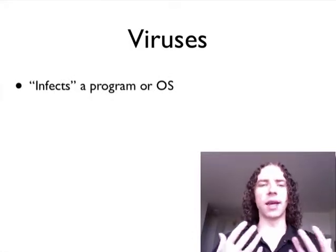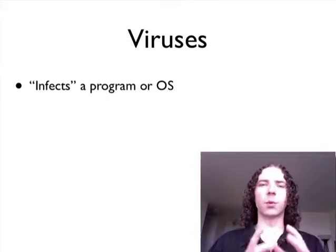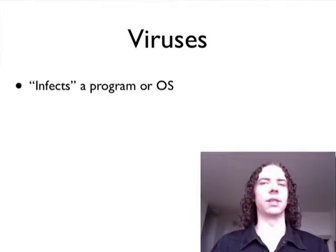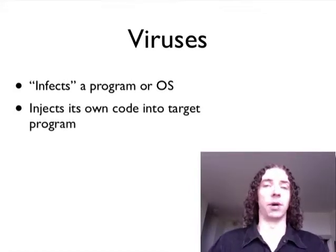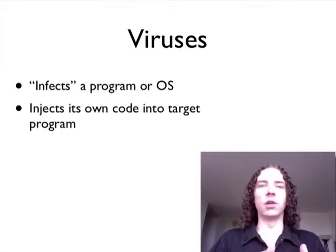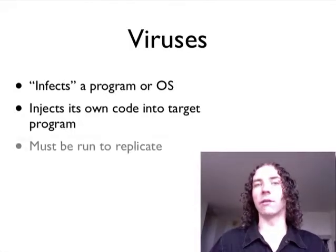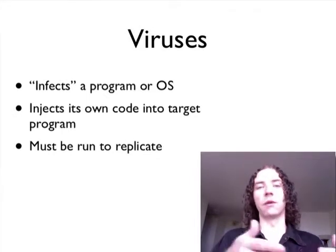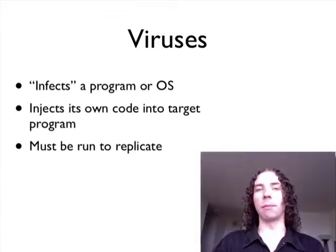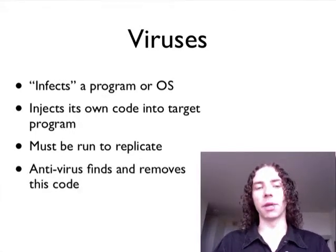A virus is kind of the thing everyone knows about — it's a well-understood concept within our culture. How it works is it actually infects the program or your operating system by injecting its own code into the target program, much like how a biological virus goes into a cell and uses its replication mechanisms to create more of itself. Once the program has been infected, when it's actually run, that's when the virus code gets to run, and it'll replicate to find other programs to infect or perform some nefarious task.